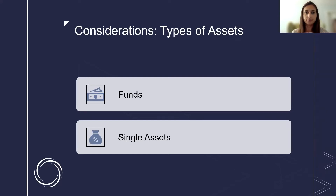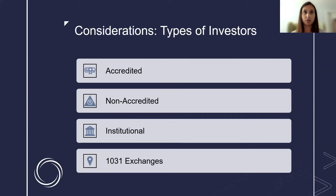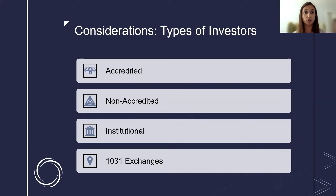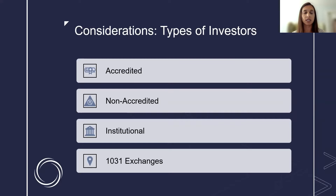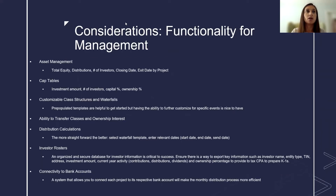Next, consider the types of investors. Are they accredited, sophisticated, or non-accredited — and will they need additional guidance? Are they institutional, requiring regulatory oversight? Are they bringing large tranches of investors requiring additional disclosures? Are they 1031 exchanges — do you need to track their basis, or did investors elect to 1031 exchange into your new property? All these things are necessary to think through to understand the level of sophistication required for your system.